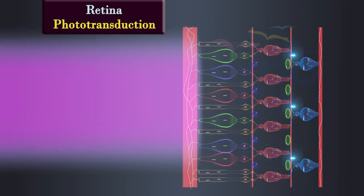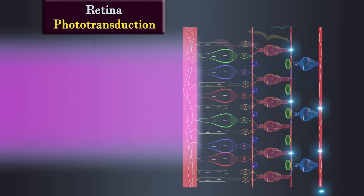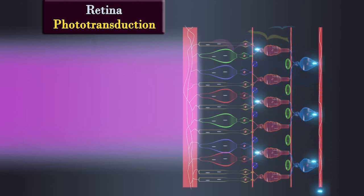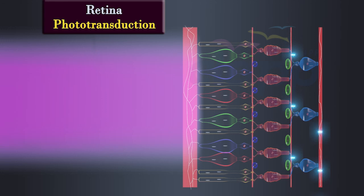When light strikes the photoreceptor cells, a chemical reaction occurs that converts the light energy into electrical signals. This process is known as phototransduction.